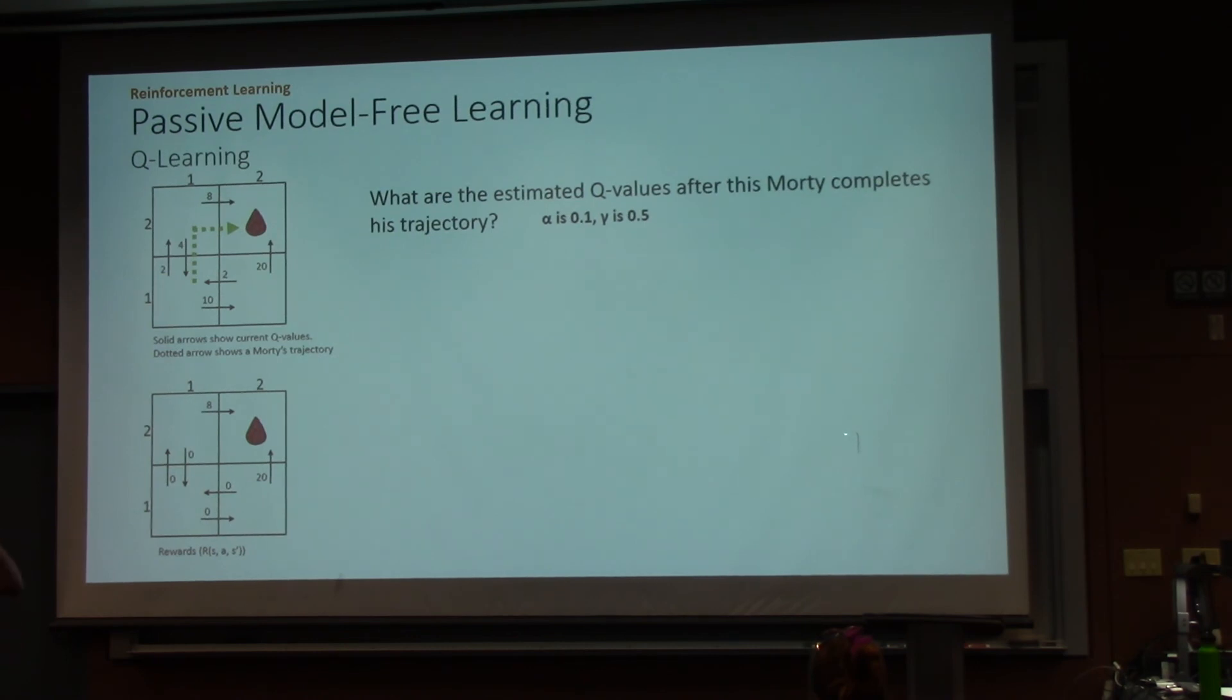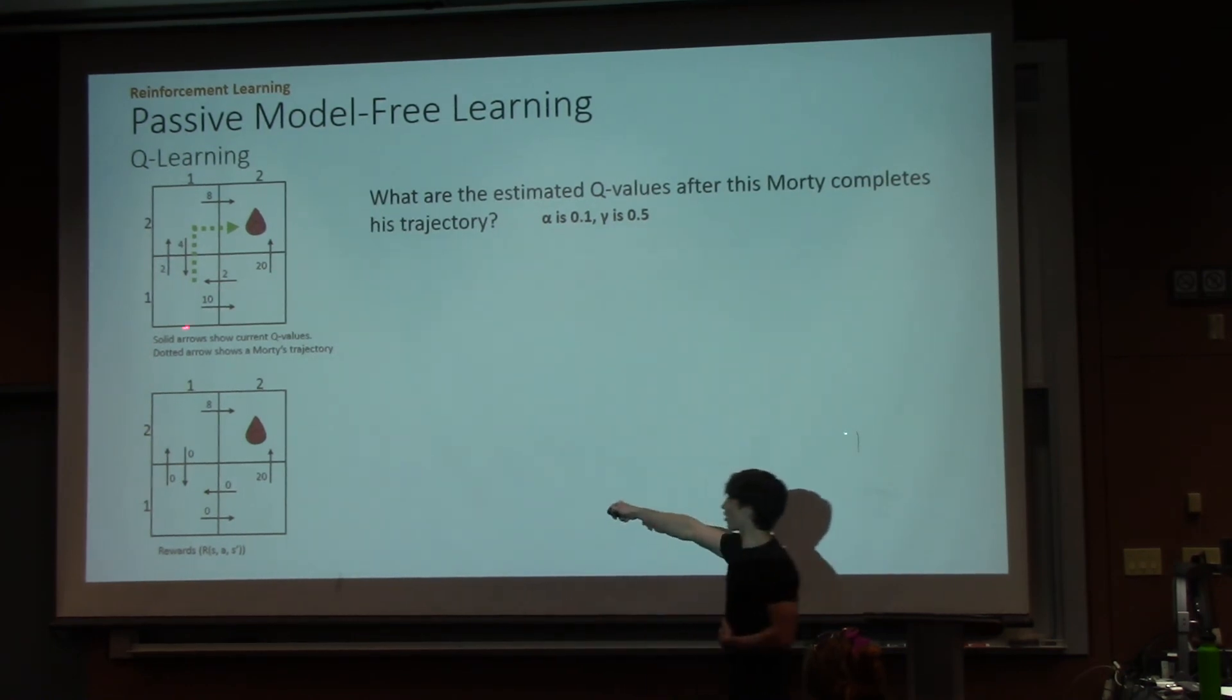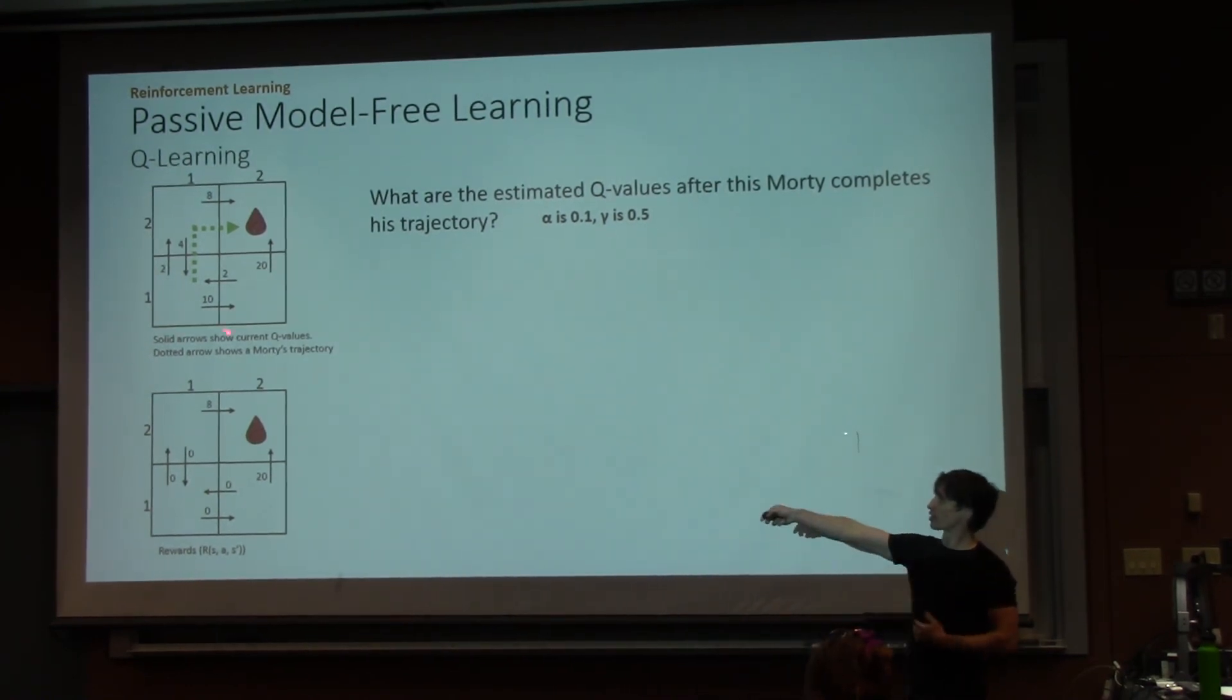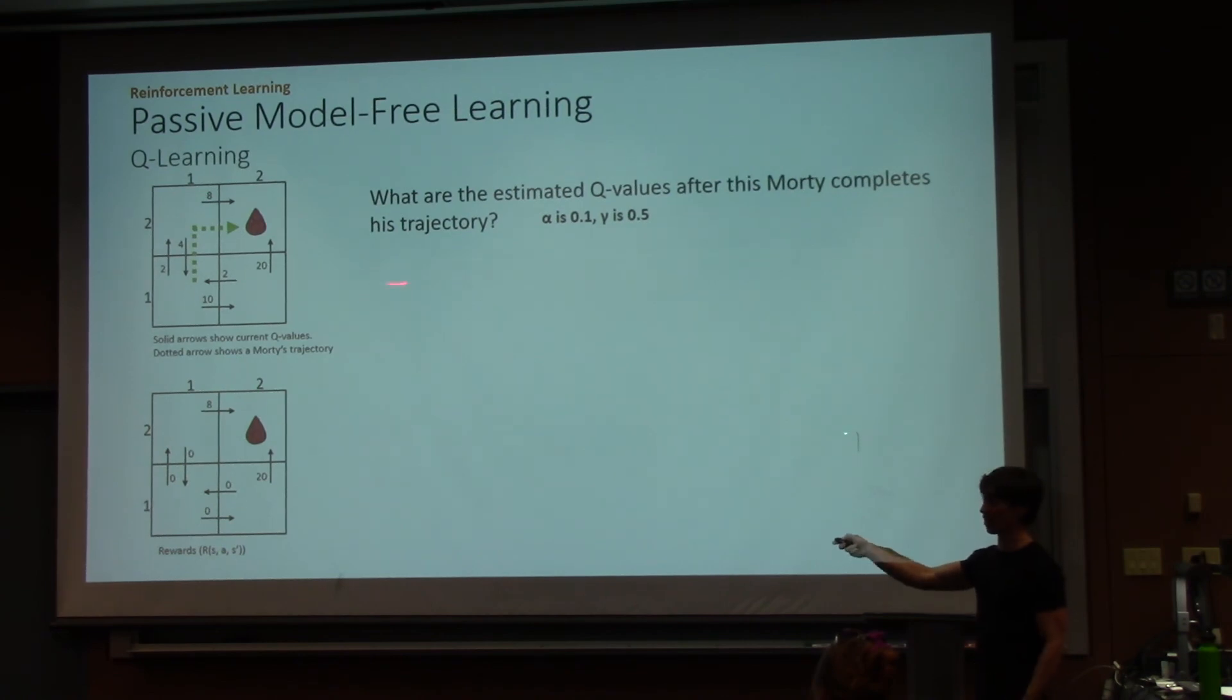Let's look at an example. This one doesn't step through as many things. But we can see in the top left here, the solid arrows. So we already have a Q function. The solid arrows show the values for our current estimates. And the arrow shows the trajectory of a Morty through the world. In the bottom, we have the rewards that we'll end up seeing when Morty makes these transitions from one state to another state. We don't know them, but again, we'll see them when Morty takes the path. So we're asked to calculate the estimated Q values after Morty now completes this trajectory.